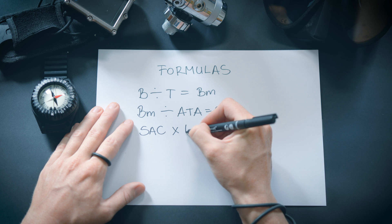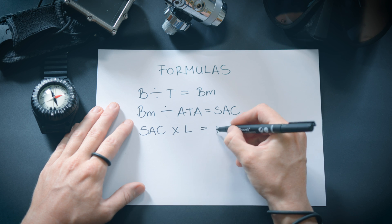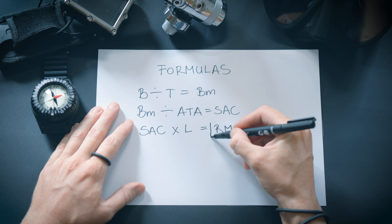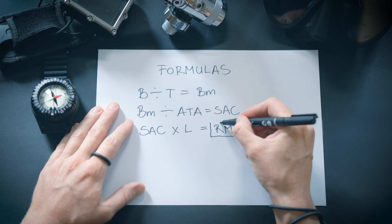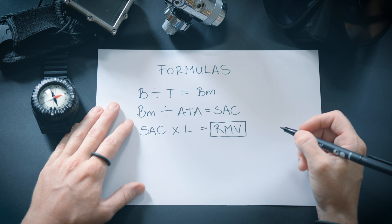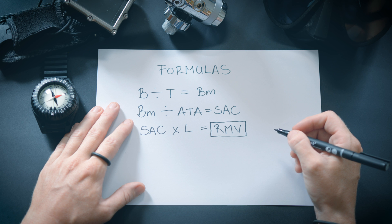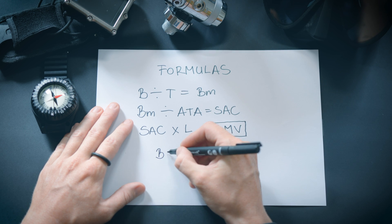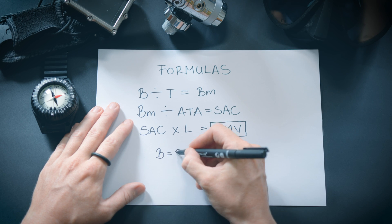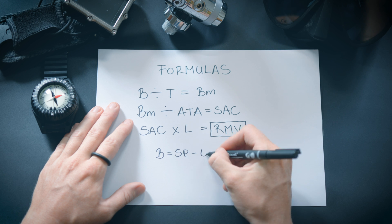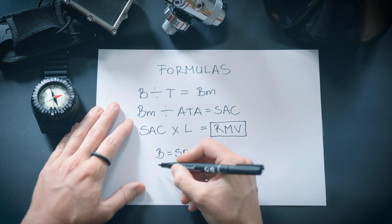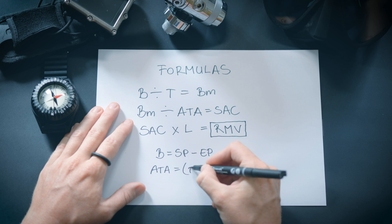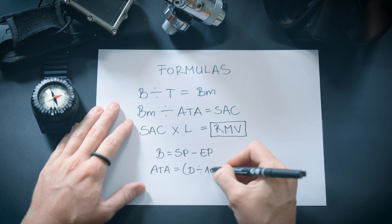To then change this to liters per minute, multiply the SAC rate by the tank capacity in liters (L). This will result in the RMV, respiratory minute volume, which is the liter amount of air you breathe at the surface — the figure you will use for calculating estimated air consumption during dive planning. As a side note, bar used is the result of subtracting end pressure from start pressure, and absolute pressure at depth is calculated by dividing the depth in meters by 10 and adding 1 to the result.